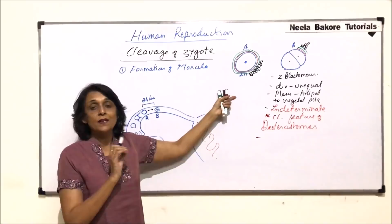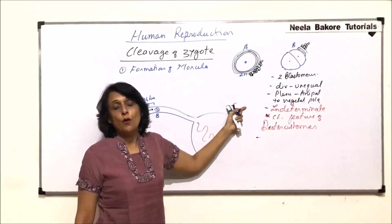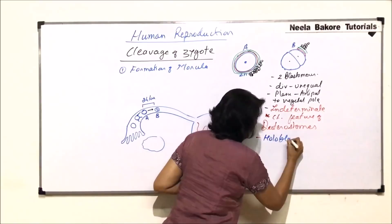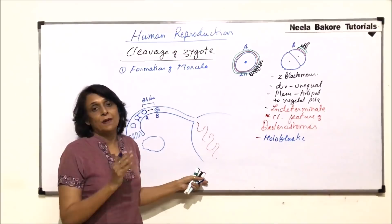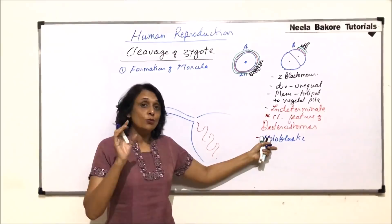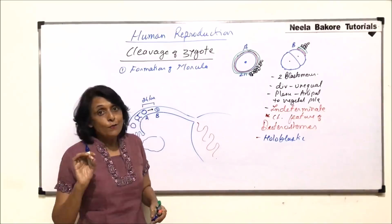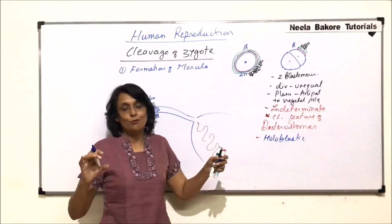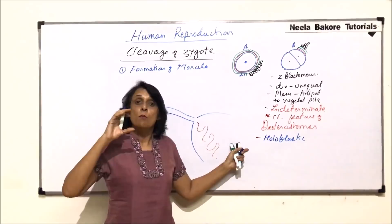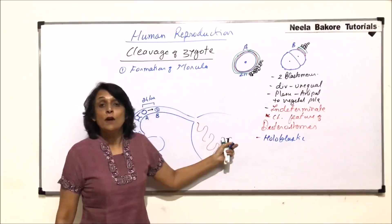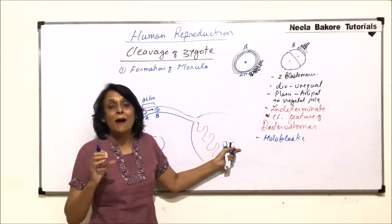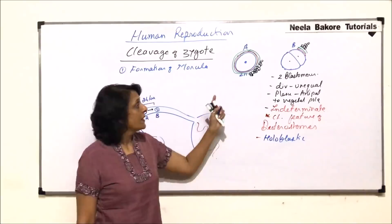One more term: this division which has resulted into formation of two cells is holoblastic. That means the complete cytoplasm has participated in this division. We talked about microlecithal eggs where there is very little yolk content in the cytoplasm and it is evenly distributed — then the complete cytoplasm gets divided into two cells. But if the egg is polylecithal, that means there is more yolk content concentrated in one area, like in bird's eggs which are telolecithal, then only the upper cytoplasmic part gets divided. Here the cleavage is holoblastic.